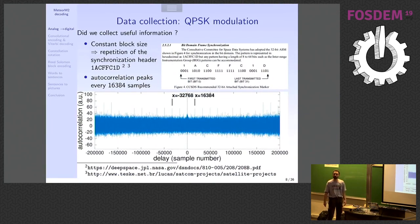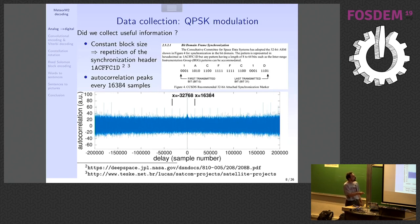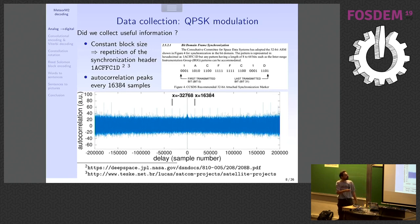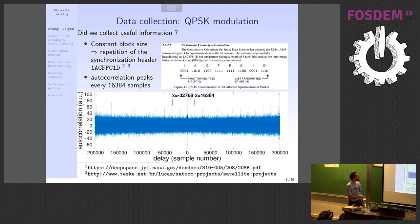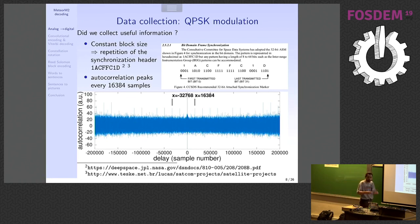Once we know it's a packetized system, something must be repeated. From the CCSDS documentation, all CCSDS-compliant communications start with a header — the packet start header is 1A CF FC 1D. By autocorrelating the signal, any redundancy will show up as a peak. Indeed, we see a peak at 16 kilobytes and another at 32 kilobytes, confirming there is repetition every 16,000 samples. The data is definitely worth investigating further.